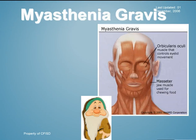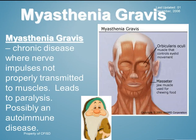Next is myasthenia gravis. This is a chronic disease where nerve impulses are not properly transmitted to muscles, leading to paralysis — meaning the muscles don't work. It is possibly an autoimmune disease, meaning your own immune system may be breaking it down.